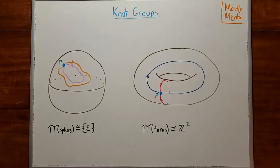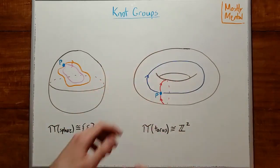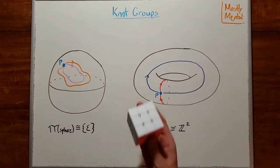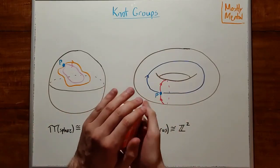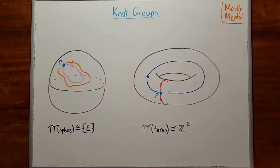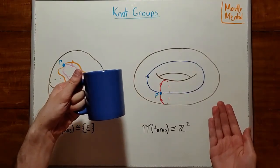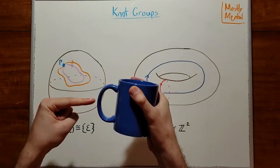One reason the fundamental group is so interesting is that it lets us distinguish between different shapes. In topology, we're allowed to stretch and deform a shape as much as we like, so long as we don't tear a hole in it or pass it through itself. So this cube is the same as a sphere, since we can just round off the corners. And this coffee cup is the same as a doughnut or torus, since we can flatten out the cup part and be left with just a handle.